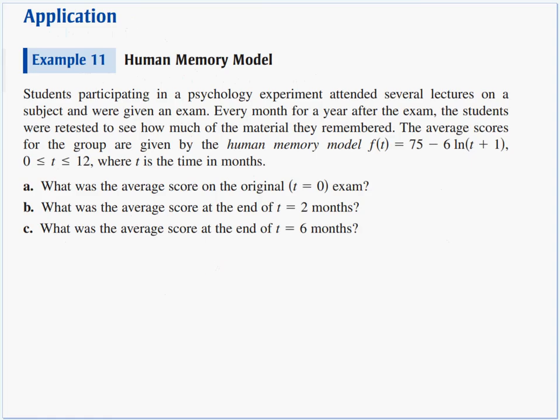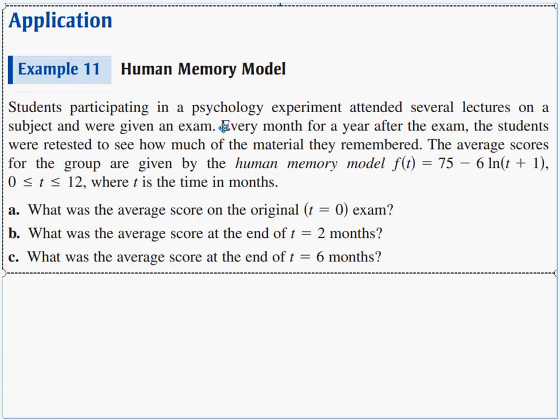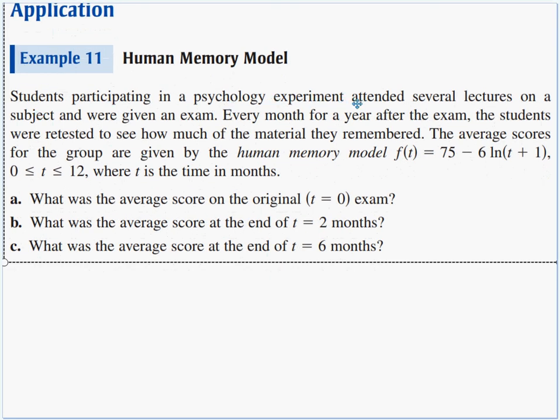Alright. One application of this type stuff. We use math to model things we can observe in the real world to gain further insight into what's going on. And this is a neat one with a human memory model. We had students participating in a psych experiment. They attended some lectures on a subject, and then were given a test. Every month for a year after the test, the students were retested to see how much material they remembered. Now think about it. If you take a class and then you have a test, as the months go by, if you retest, I'm sure your scores are not going to get higher unless you're studying on your own. As time goes by, you forget stuff, and your grades should go downhill. And they took the student data, they fed it to a memory model, and it happened to fit a log model. So the average scores of the group were given by the human memory model. So f(t), t for time, is 75 minus 6 times the natural log of (t + 1), where t is the number of months after the exam.